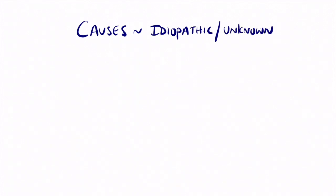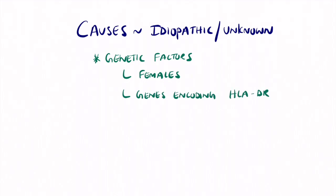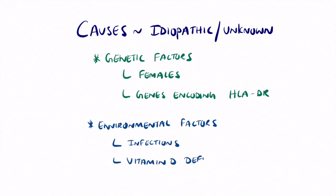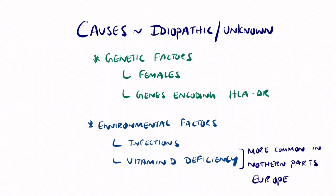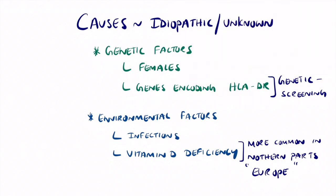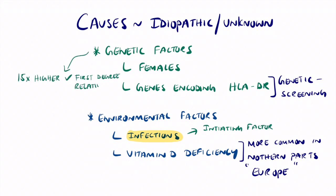The causes are unfortunately idiopathic and unknown, but there are mainly genetic factors. Females are more affected, and people with multiple sclerosis commonly present with the HLA-DR gene. Environmental factors include infections and vitamin D deficiency, especially more common in northern parts of Europe or away from the equator. Genetic screening can be used to check for this gene. Importantly, infection is always the initiating factor, and with genetic factors there is a 15% or higher chance of having MS if a first-degree relative has it.